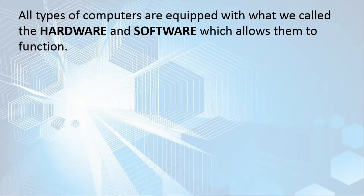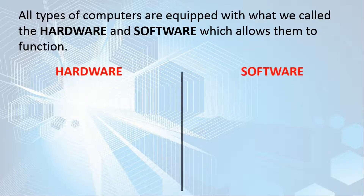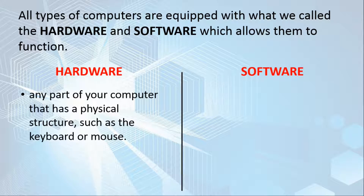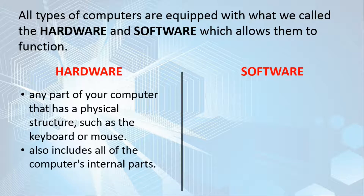All types of computers are equipped with what we call hardware and software, which allows them to function. How do we differentiate hardware from software? From the word itself — hardware is any part of your computer that has a physical structure, such as the keyboard or the mouse. Hardware also includes all of the computer's internal parts. All tangible things in your computer are what we call hardware.